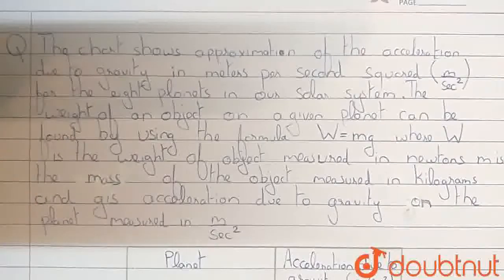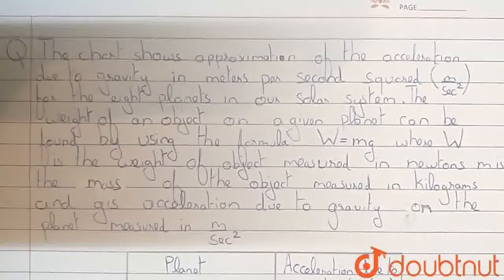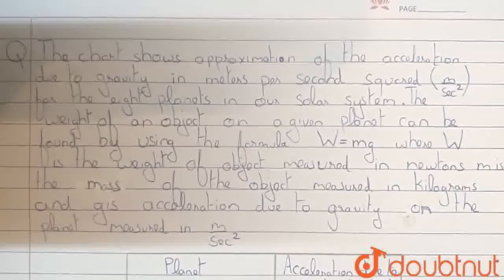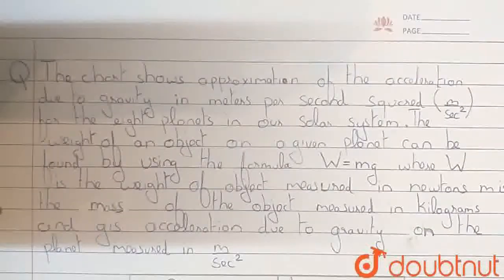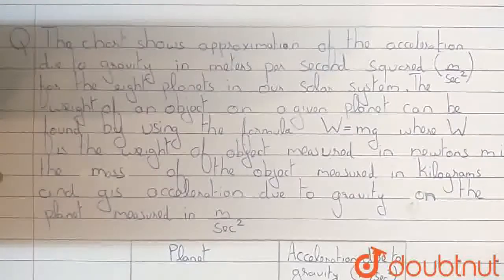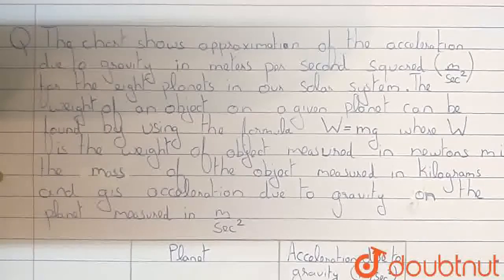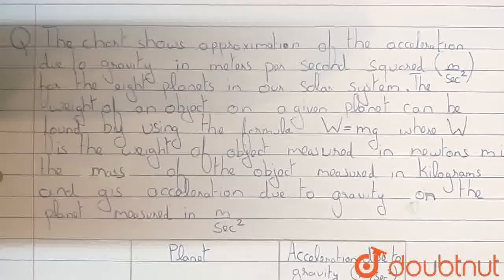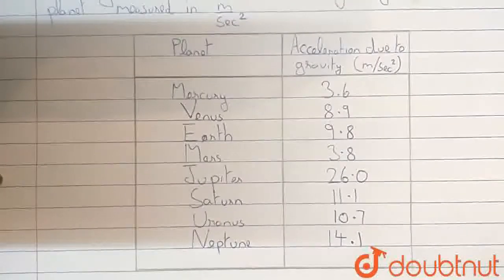Alright, so this is our question. Here we are told that the chart shows approximation of the acceleration due to gravity in meters per second squared for the 8 planets in our solar system. The weight of an object on a given planet can be found by using the formula w is equal to mg, where w is the weight of the object measured in newtons, m is the mass of the object measured in kilograms, and g is the acceleration due to gravity on the planet measured in meters per second squared. This is actually the chart they are referring to, and it shows the acceleration due to gravity on each of the 8 planets in our solar system.